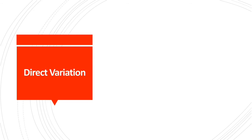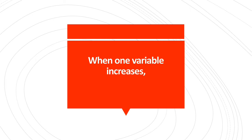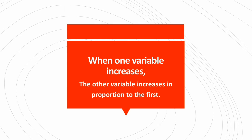What is direct variation? Direct variation is a relationship between two variables in which one is a constant multiple of the other. In particular, when one variable changes, the other changes in proportion to the first. If b is directly proportional to a, the equation is of the form b equals ka, where k is a constant. So, it means when one variable increases, the other variable increases in proportion to the first.